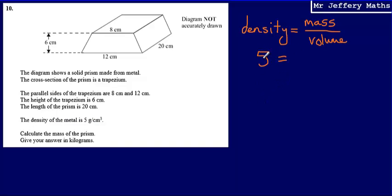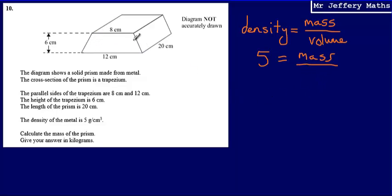So we can say that 5 will be equal to the mass — which is what we're looking for — divided by the volume. We don't have the volume, so we're going to need to work out the volume of this prism.